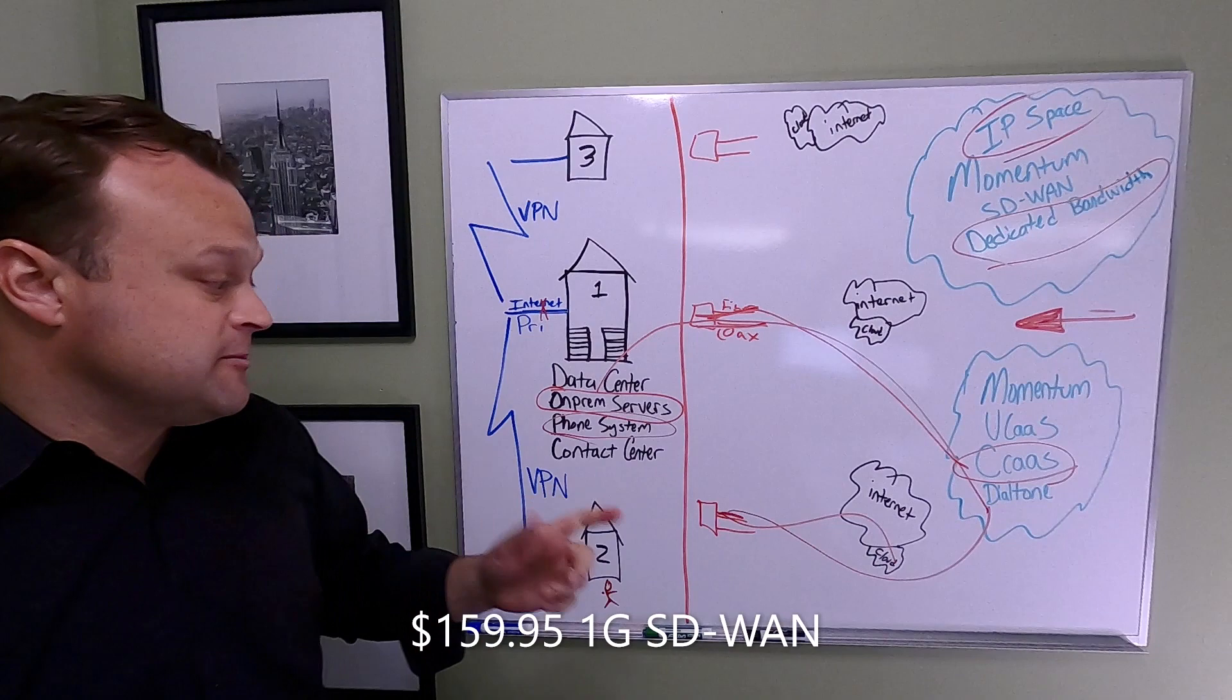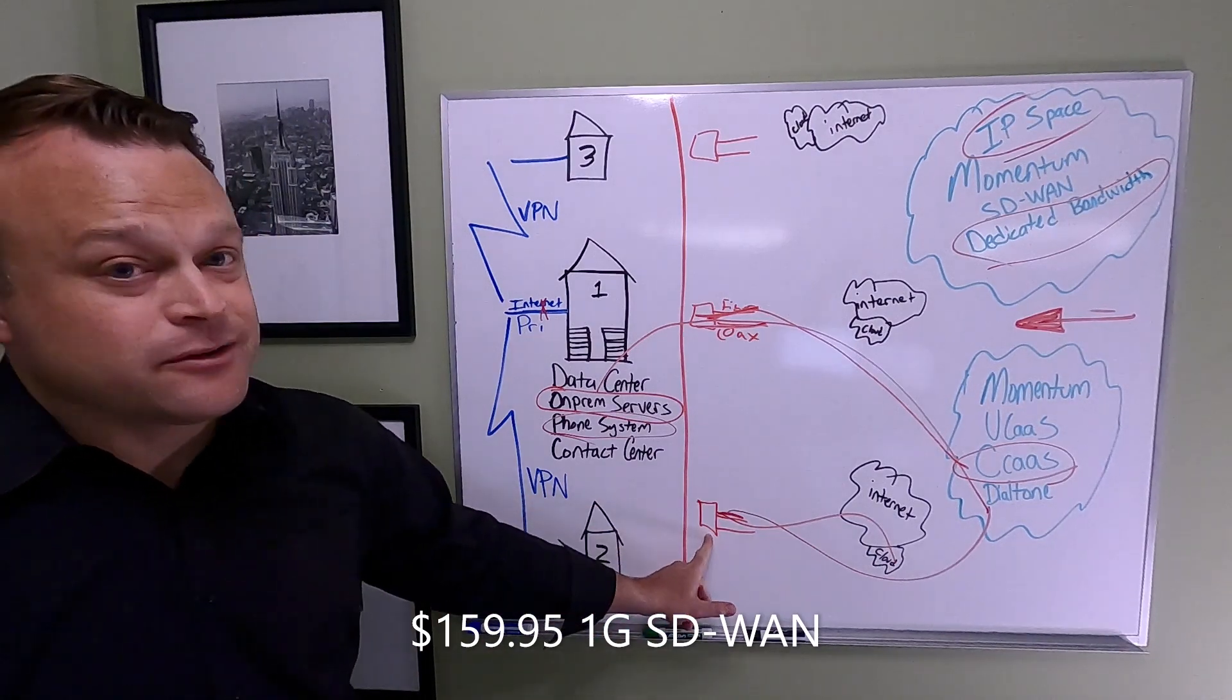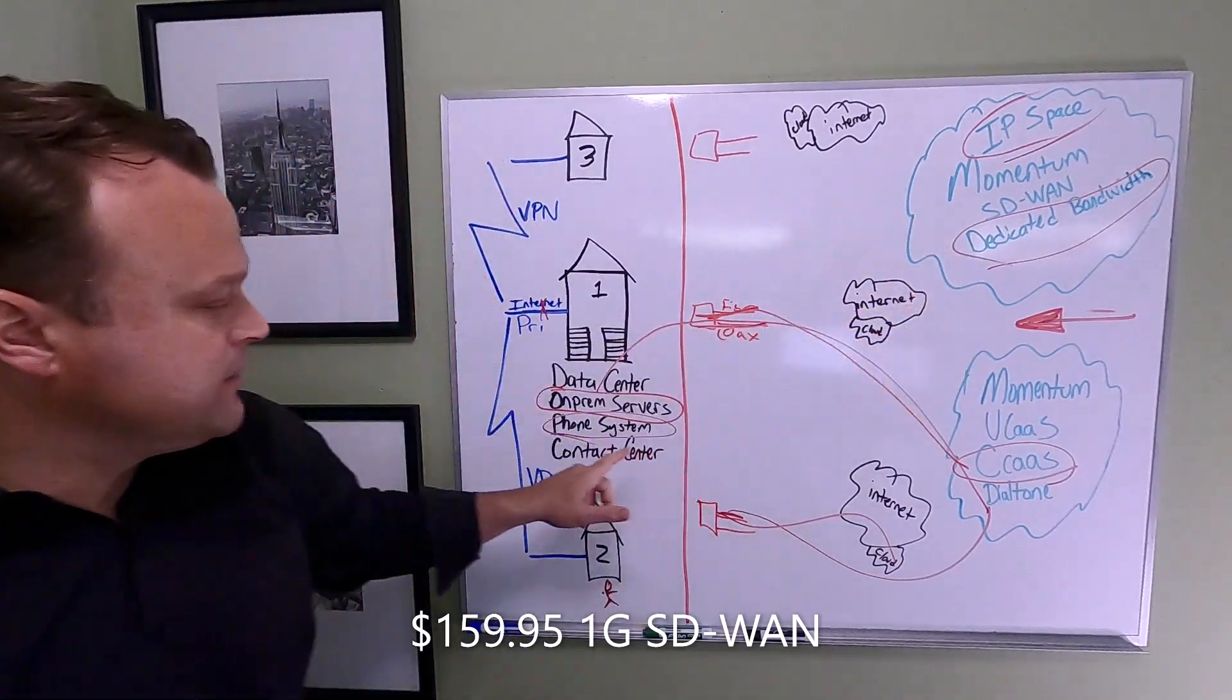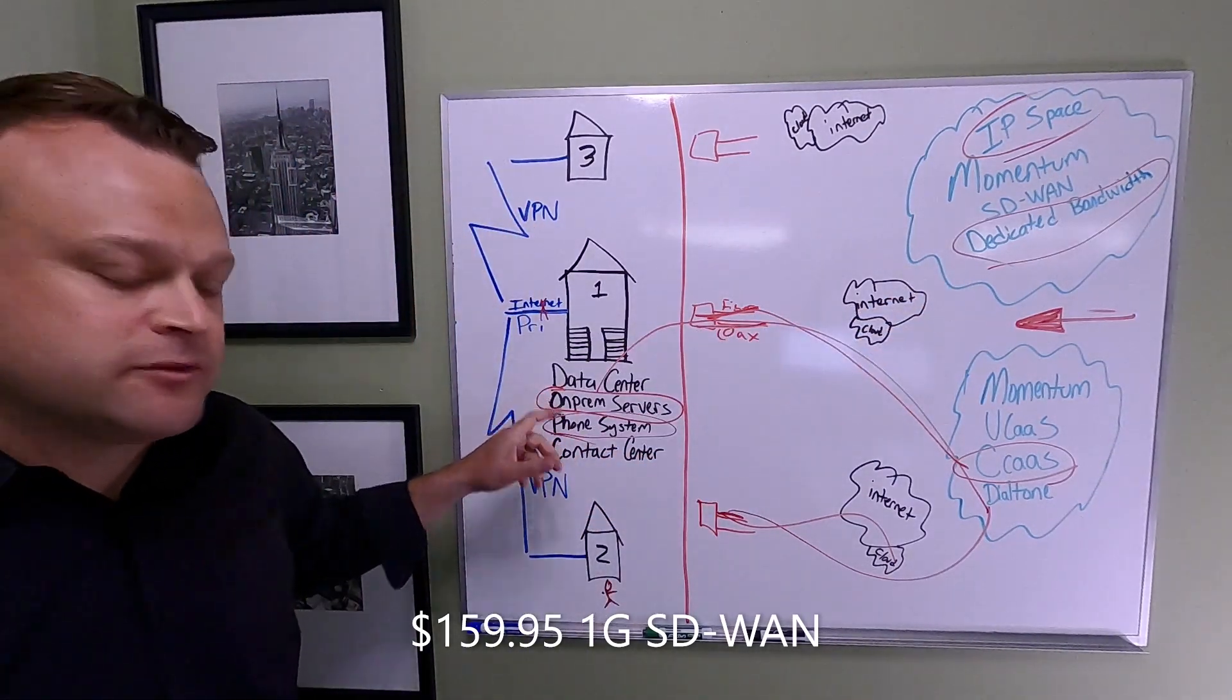Second, we provided dedicated bandwidth. What that means is they still had on-prem servers. These locations are still accessing on-prem servers that are very important to them.